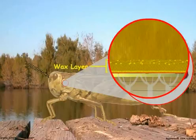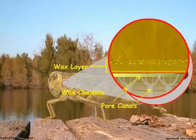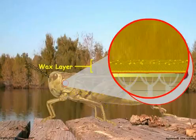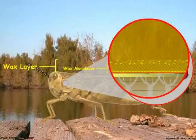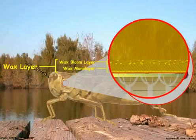A wax layer protects the insect from water loss. Pore canals may transport wax to the epi-cuticle, and wax channels at the ends of the pore canals deposit the wax onto the inner epi-cuticle. The wax consists of an inner monolayer of organized wax molecules and an outer bloom layer of randomly mixed fatty acids and fatty alcohols. Because insects are small animals, they have a large surface area relative to their volume, which means they have a potential for serious water loss through the cuticle, and the wax serves to suppress cuticle transpiration.